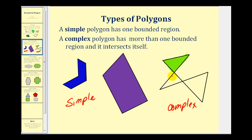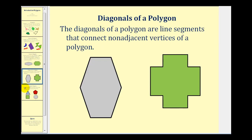This complex polygon has three bounded regions: one here, one here, and one here, for a total of three bounded regions. Now let's talk about the diagonals of a polygon. The diagonals of a polygon are the line segments that connect non-adjacent vertices of a polygon.